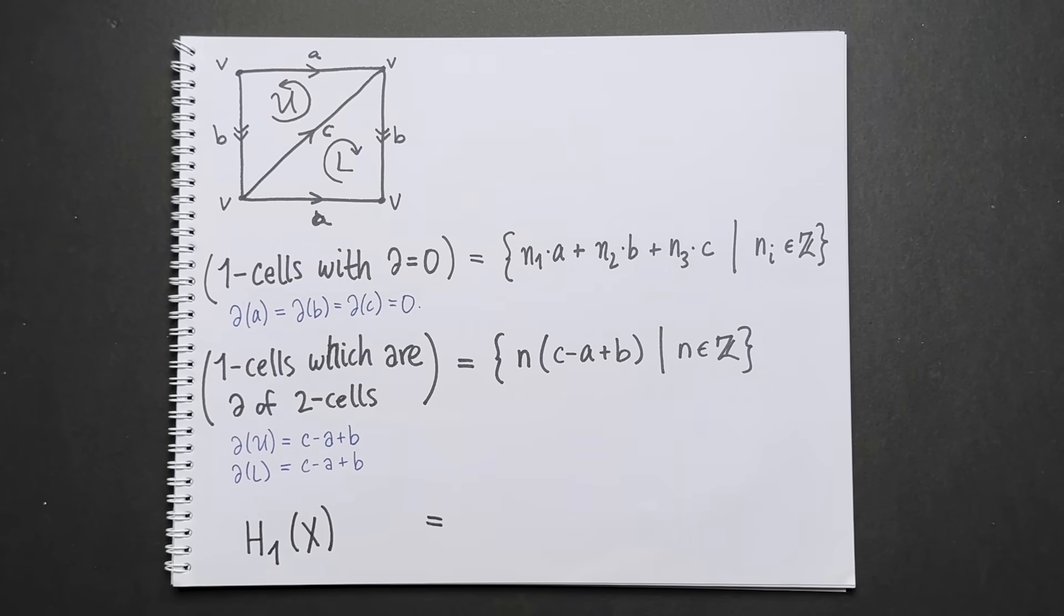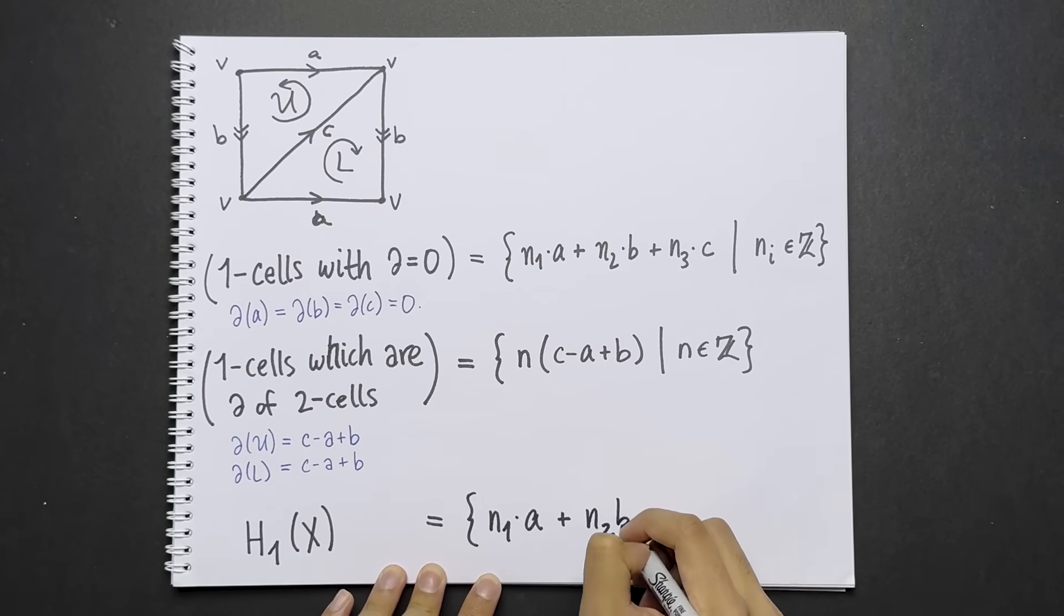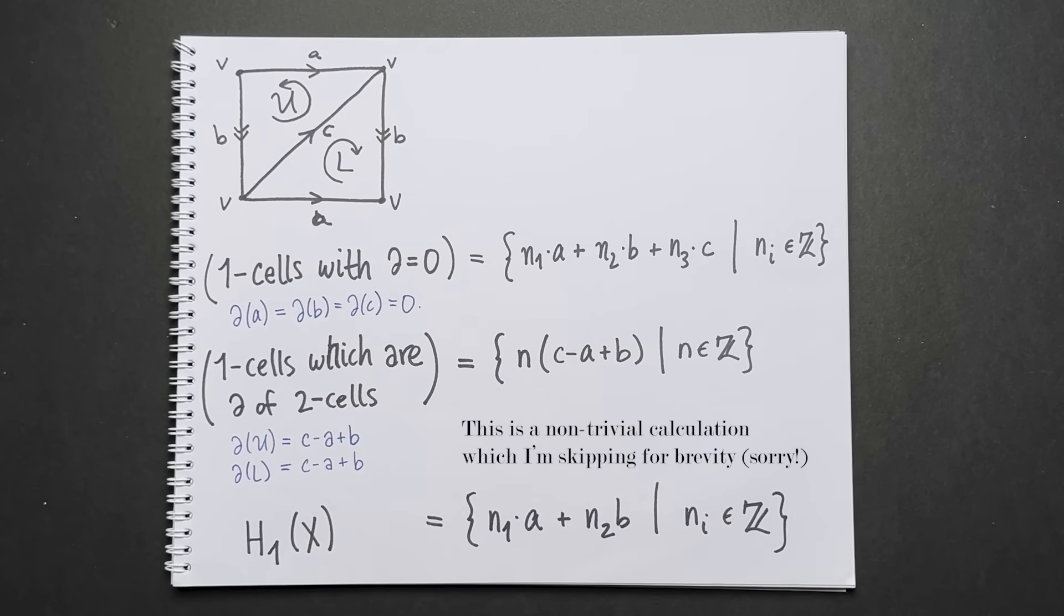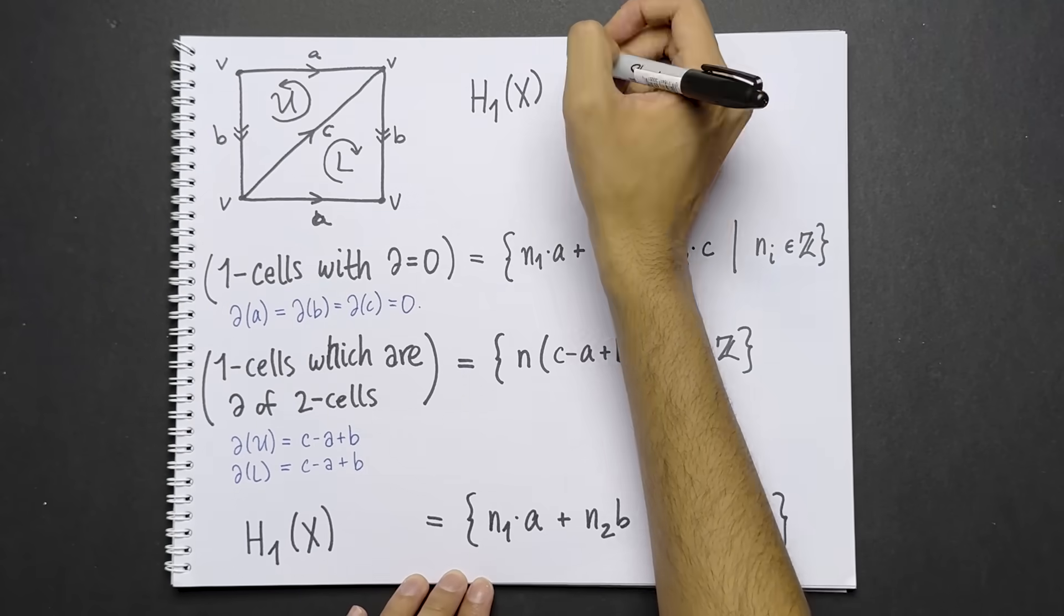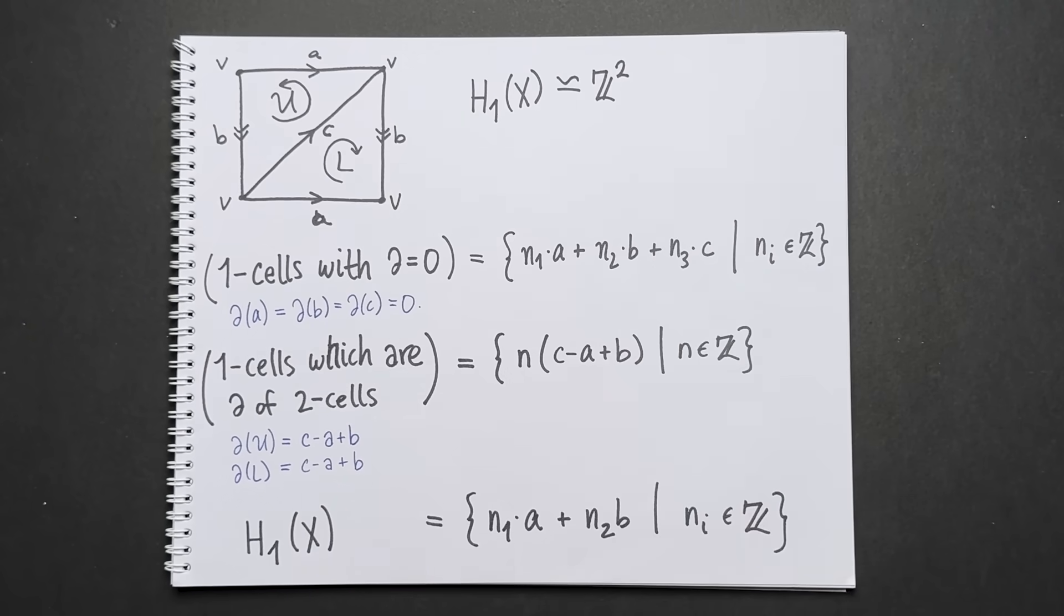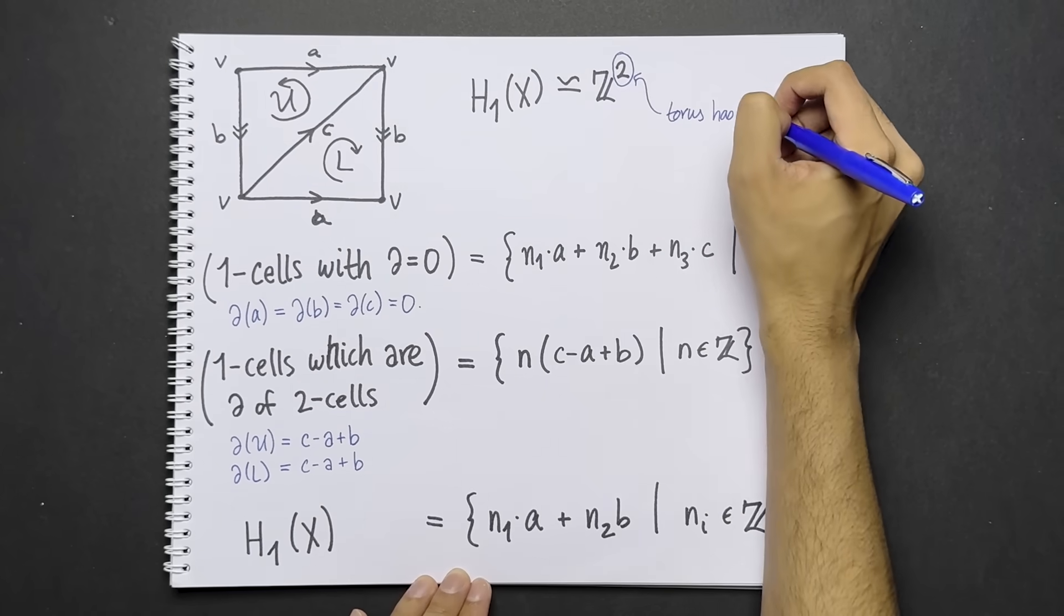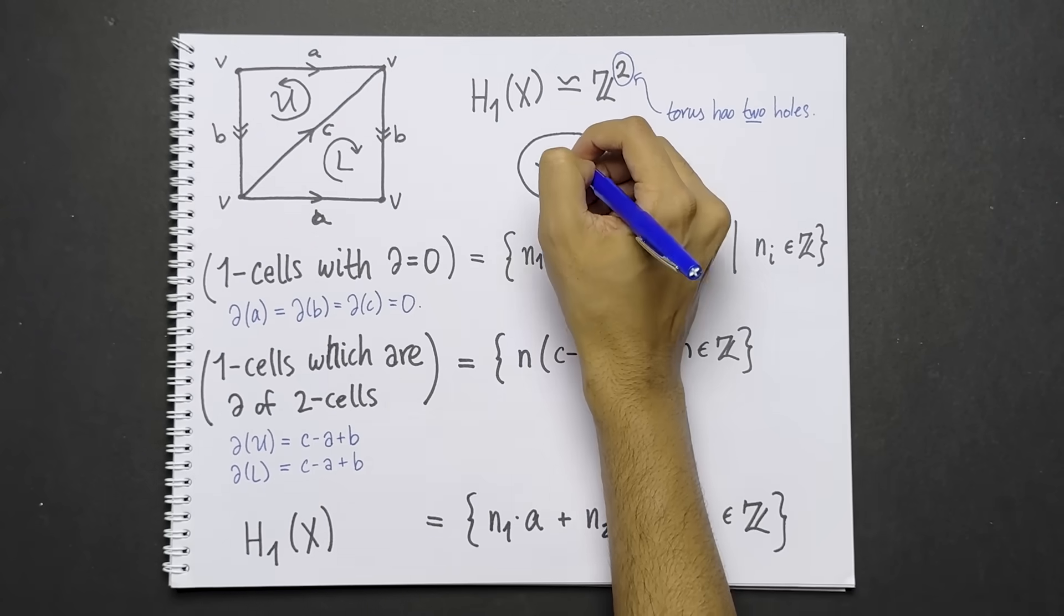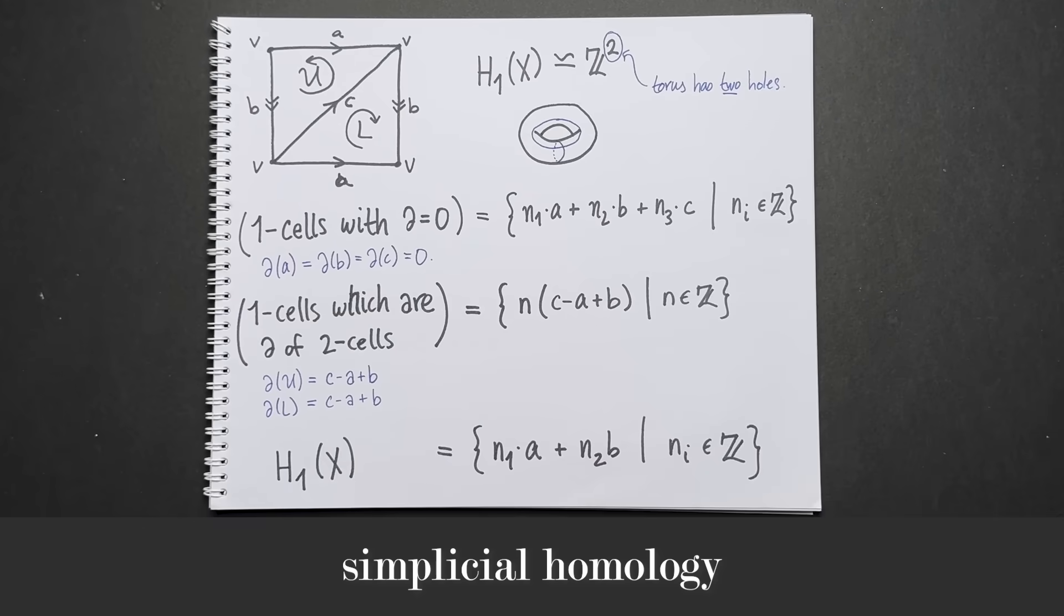The first homology group of X is this modulo this. This equals the set of all integer multiples of A and B. Therefore, H1 of X is isomorphic to two copies of the integers as a group. This reflects the fact that the torus has two holes, which I'm drawing here in blue. Again, this definition of homology is sometimes called simplicial homology, because simplicies are another word for cells.